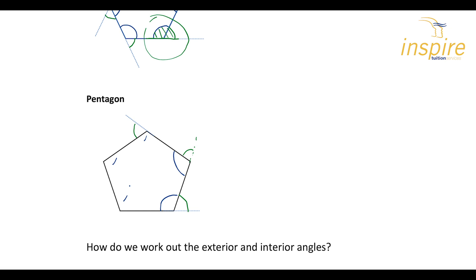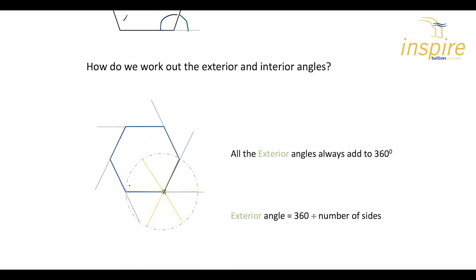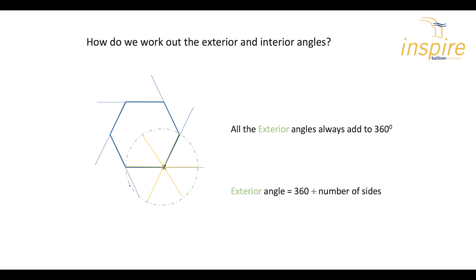The question arises: how do we work them out? How do we work out what an exterior and interior angle for a particular shape — we call them polygons — a 2D shape of any number of sides? We want to find out what the exterior and interior angles are. Before we can do that, we need to know a couple of facts. You can calculate this using some very complicated formulas, but I'm going to keep it easy for you.